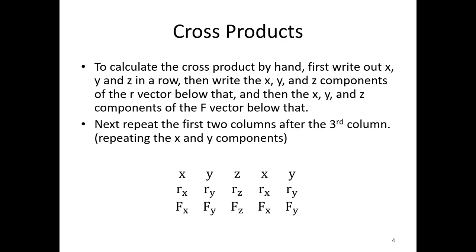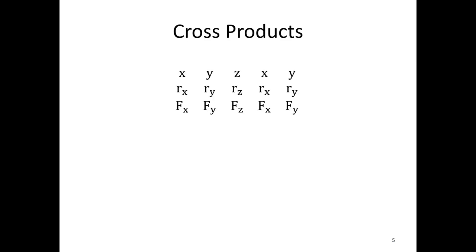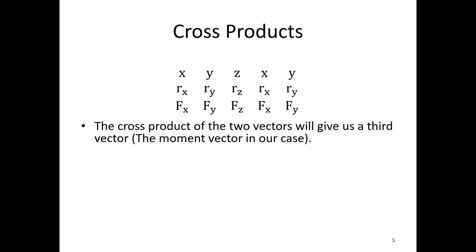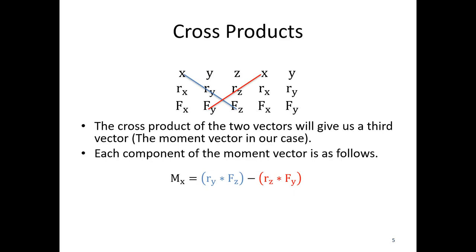This setup is to help you remember a formula. The cross product of the two vectors will give us a third vector with three components. To find those components, we do the following. For x, I would take this diagonal through x, so ry times fz, minus this other diagonal that goes through x. So minus rz times fy. So ry times fz minus rz times fy.